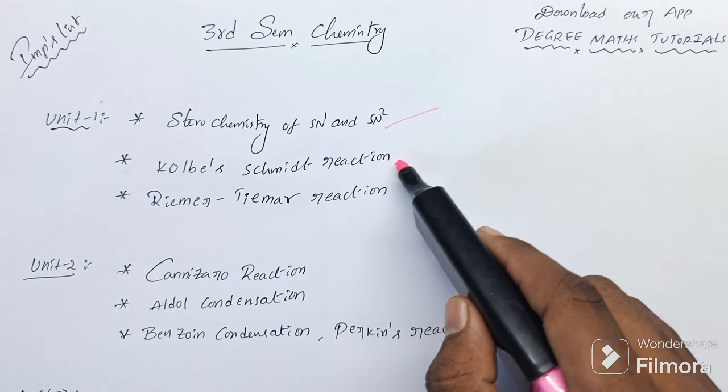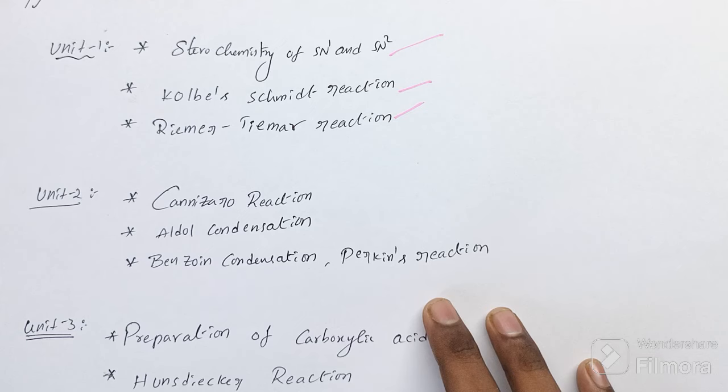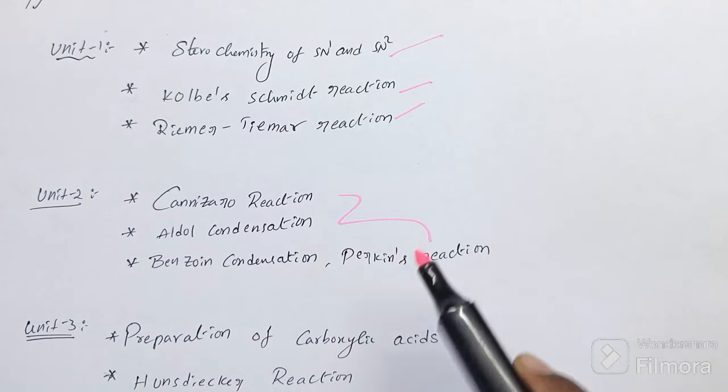Two reactions are important in stereochemistry, these two named reactions are important. In Unit 2, these four named reactions are important.